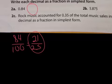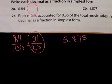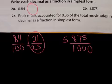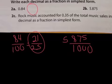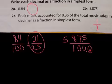Let's try part B: we have 5.875, so that's 5 and 875 thousandths. When you simplify, you can divide both by 125. How many 125s are in 875? I count 7 of them. And in 1000? I count 8 of them. So it simplifies to 5 and 7/8.